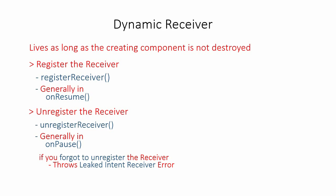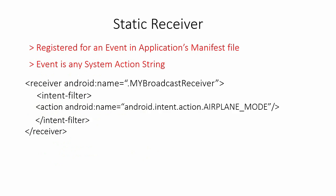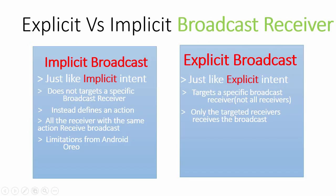Just like implicit and explicit intents in Android, we also have implicit and explicit broadcasts. Implicit broadcasts do not target a specific broadcast receiver — instead they define an action, and all receivers registered with that same action will receive the broadcast.